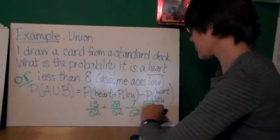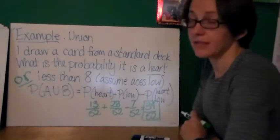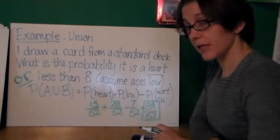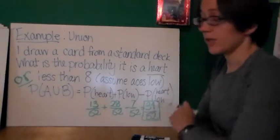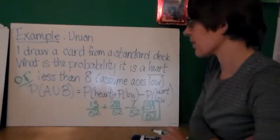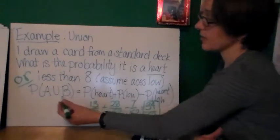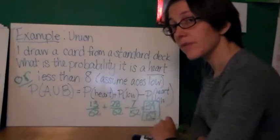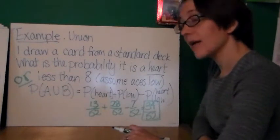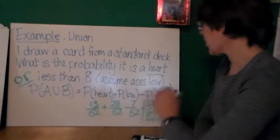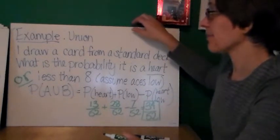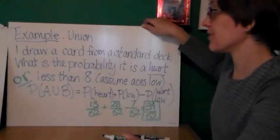34 out of 52. If you want to reduce that fraction to 17 over 26, or if you want to express it as a decimal, that's just fine, but it's perfectly acceptable to leave your answer this way. Okay, again, what I'm doing here is considering the probability of each of these occurring and subtracting the probability of both of them occurring together at the same time. So that's our union of events.